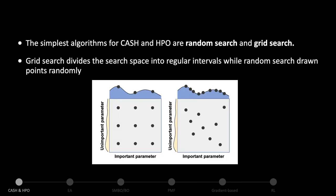The simplest algorithms for CASH and HPO are random search and grid search. Grid search divides the search space into regular intervals, while random search draws points randomly. For example, when optimizing a two-dimensional function where only one dimension is important, grid search with nine trials covers only three important parameter values, whereas random search can explore nine distinct values in the key dimension. Therefore, random search is more likely to find the optimal combination of parameters than grid search in practice.